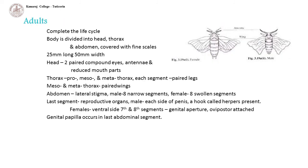Adults: the adult stage completes the life cycle of Bombyx. The body is divided into head, thorax and abdomen, and the whole body is covered with fine scales. They are 25 mm long and 50 mm in width. Head bears paired compound eyes, antennae and reduced mouth parts. Thorax shows prothorax, mesothorax and metathorax; each segment bears paired legs, while meso- and metathorax bear paired wings. Abdominal segments bear lateral stigmata. Abdomen shows 8 narrow segments in males and 7 swollen segments in females.